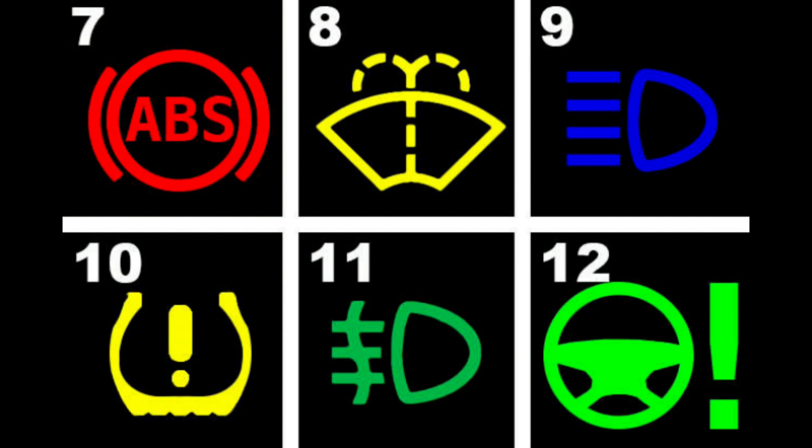Number 9: High beam indicator. What it looks like: An uppercase D moving to the right with impressive haste. What it means: Your brights are on. Unless you're in the middle of nowhere with no cars in front of you, you're using the wrong lights.